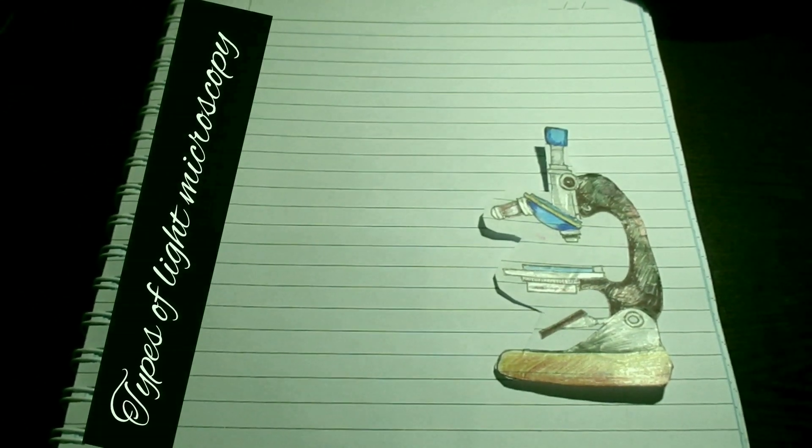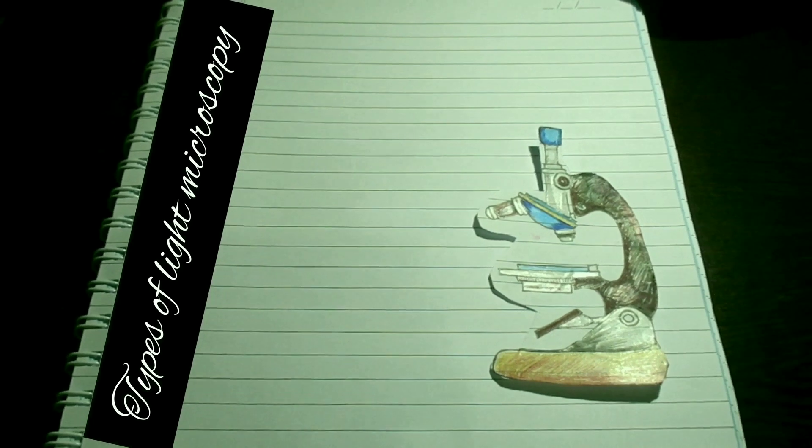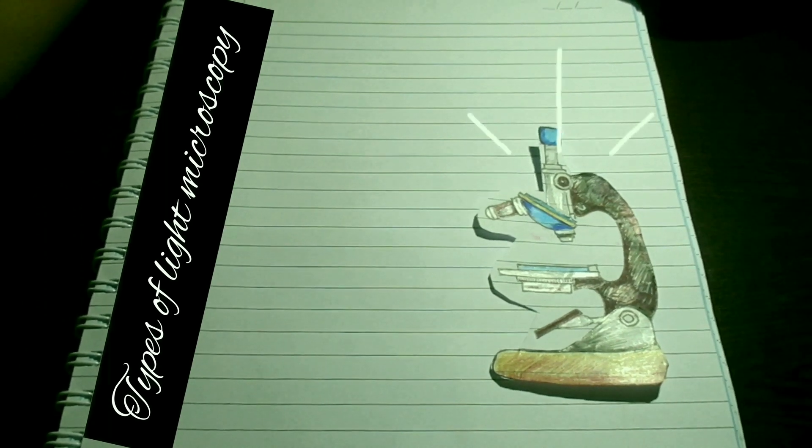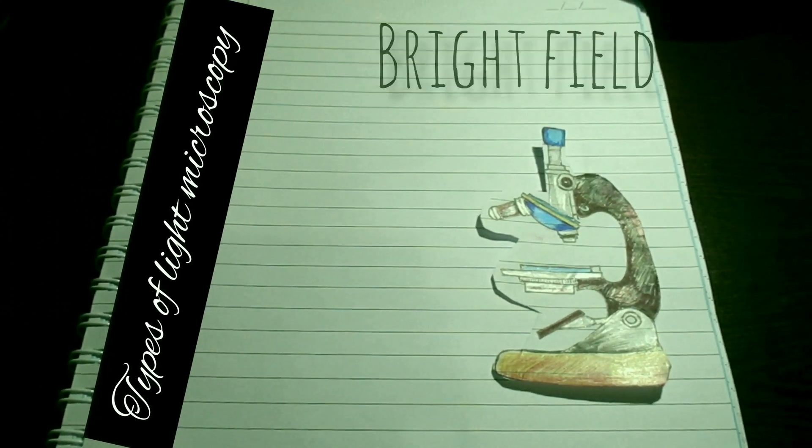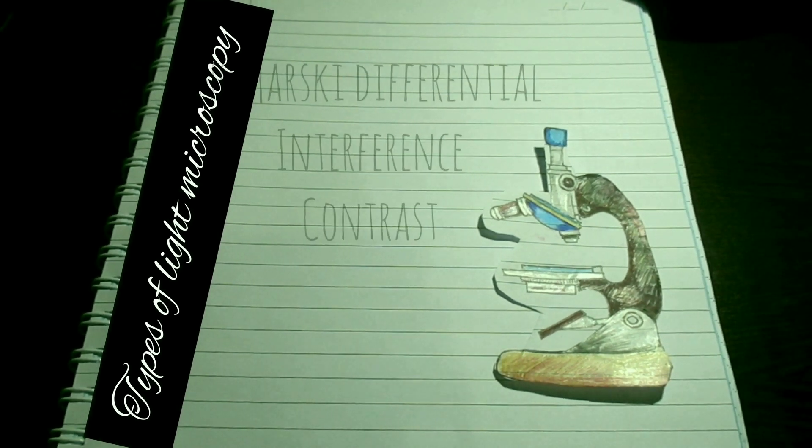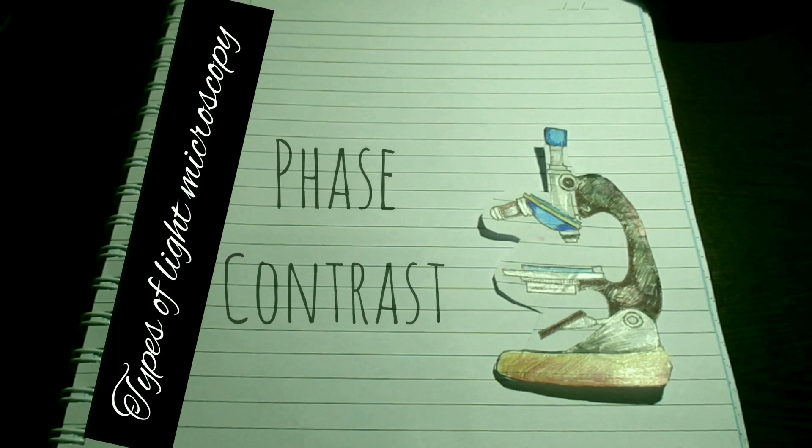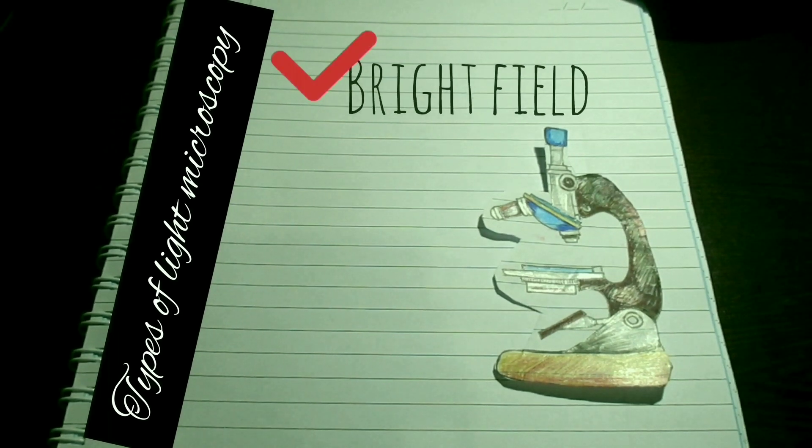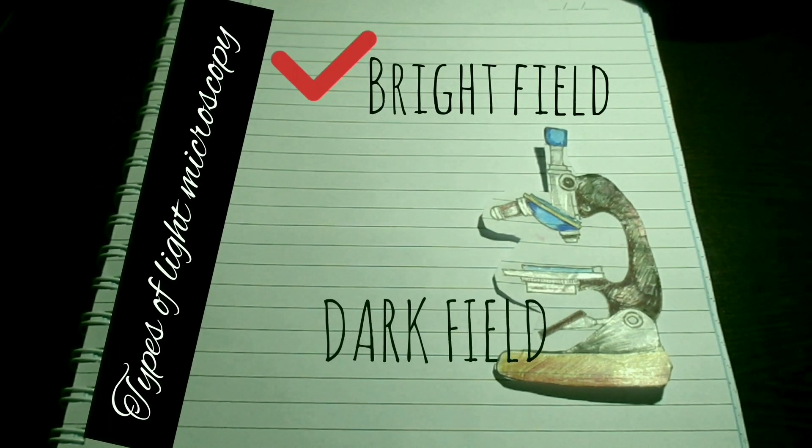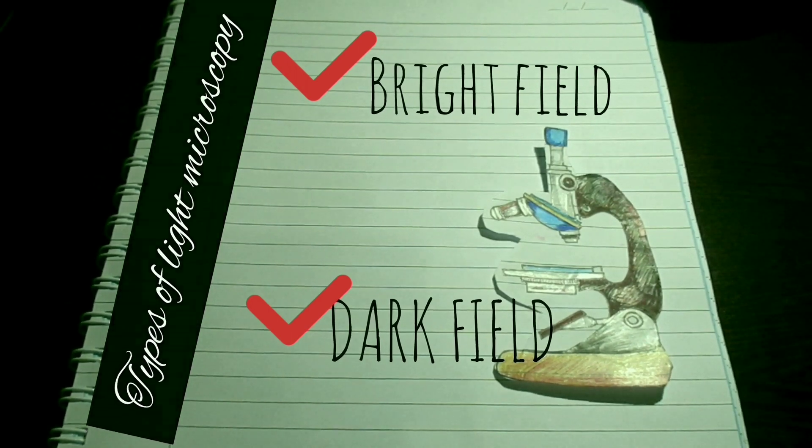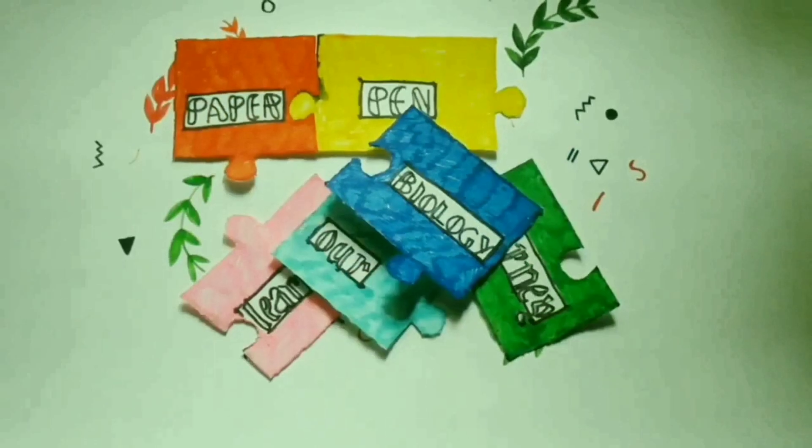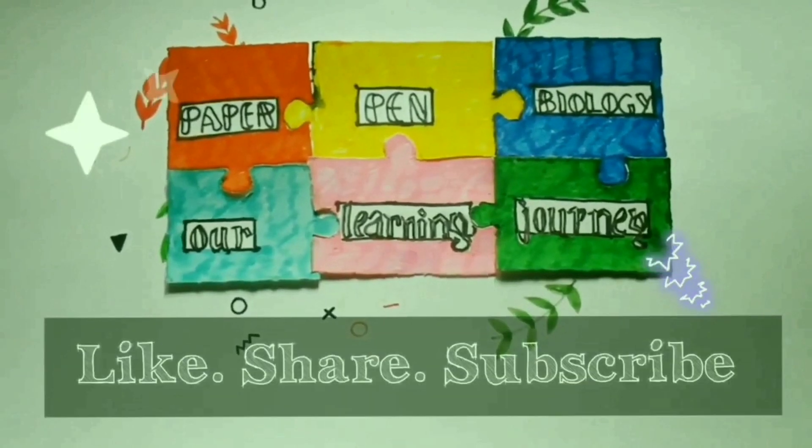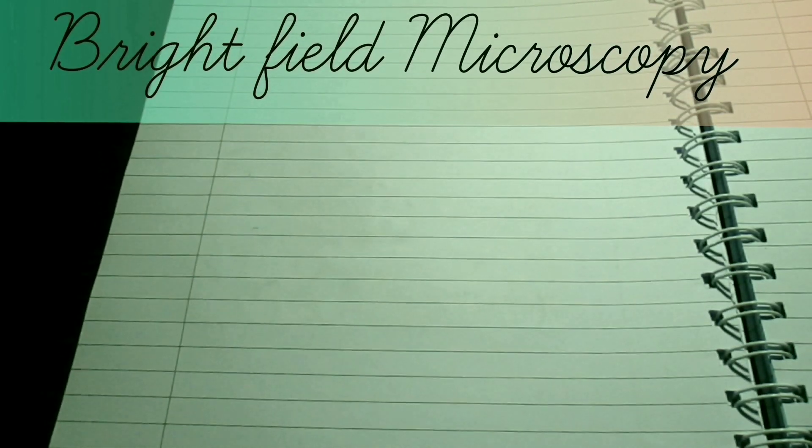Hello guys, today in this video we will understand the types of light microscopy. There are four types of light microscopy: bright field microscopy, dark field microscopy, Nomarski differential interference contrast microscopy, and phase contrast microscopy. Among these types of microscopy, we will study about the first two in this video.